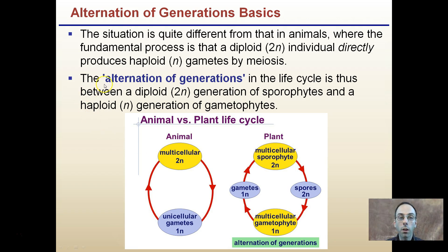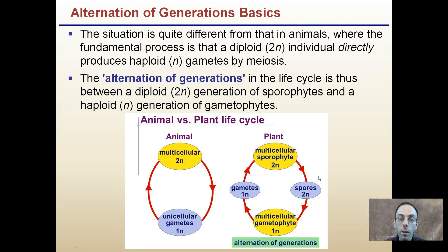However, in plants this alternation of generations in the life cycle alternates between a diploid 2n generation of sporophytes and a haploid n generation of gametophytes. We still have our multicellular sporophyte, but we also have a multicellular gametophyte — unlike the unicellular gametes in animals. There are a couple more steps involved in plants versus animals, so it's important to keep track of this.